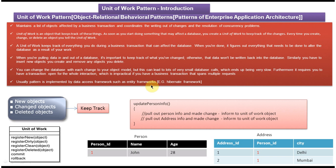Usually, the Unit of Work pattern is implemented by data access frameworks like Entity Framework or Hibernate, so we don't need to write it ourselves. But if you want to write it, you can create a unit of work class with methods like register new, register dirty, register clean, and register deleted to track what objects have changed as a list. Once all work is finished in the business transaction, you can iterate through the list and save the information in the database.